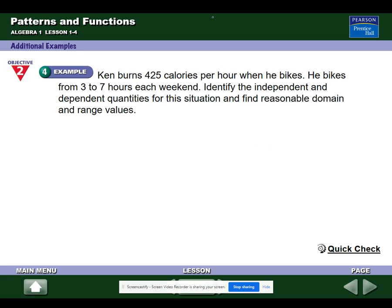Let's take another example and talk about domain and range specifically. Ken burns 425 calories per hour when he bikes. He bikes from three to seven hours each weekend. Identify the independent and dependent quantities for this situation and find a reasonable domain and range. So, again, I'm about to say what's dependent on the other. If you want a little time to think, pause it.